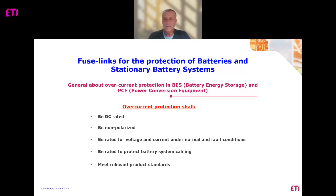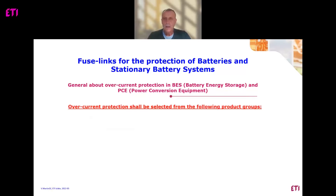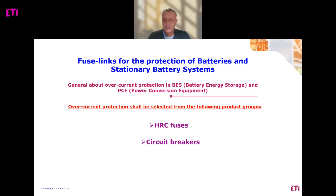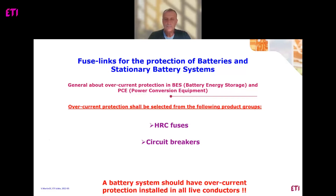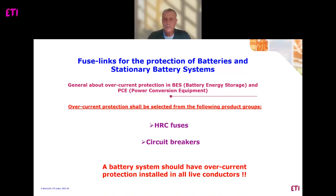Up to two years ago there was no proper standard for overcurrent protection. That is why overcurrent protection was selected from the following product groups: one is definitely high rupturing capacity fuses, second are circuit breakers and powerful MCCBs. Most importantly, the battery system should have overcurrent protection installed in all live conductors — this is very important and we should not forget it.